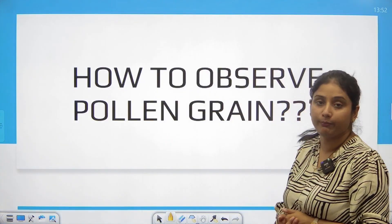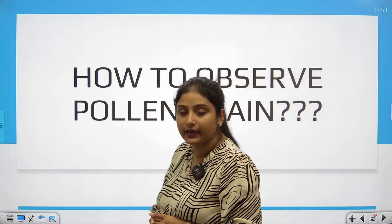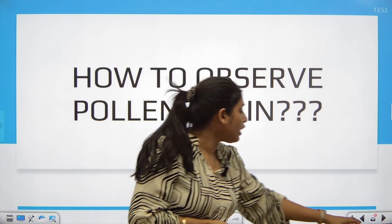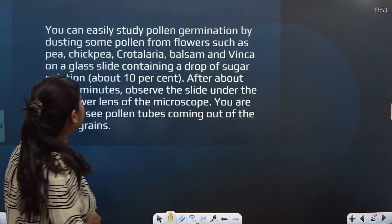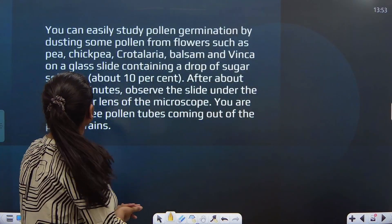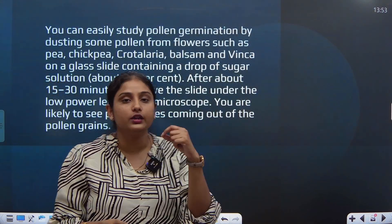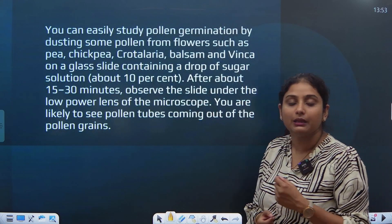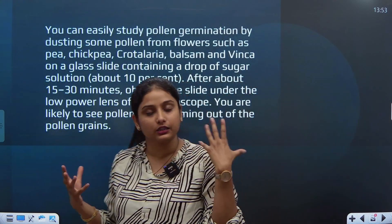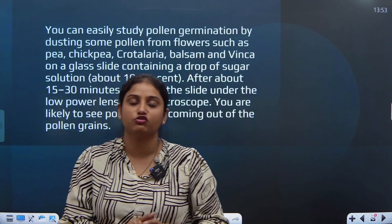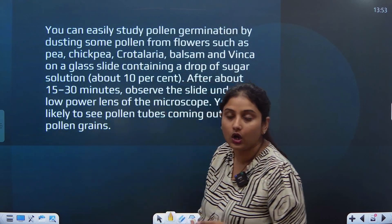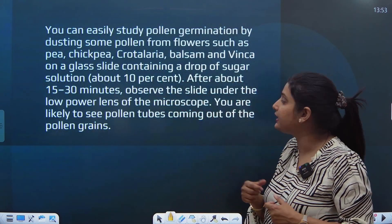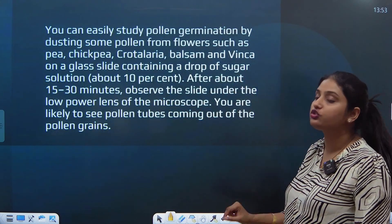How to observe pollen grain germination? There is a paragraph to see how pollen grains germinate. You can easily study pollen germination by dusting some pollen from flowers such as pea, chickpea, crotoneria, balsam and vinca. You can take pollen from any of these plants and sprinkle it on a glass slide, which can be visualized under the microscope.